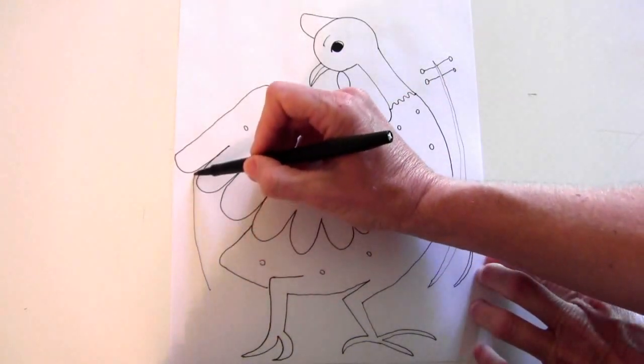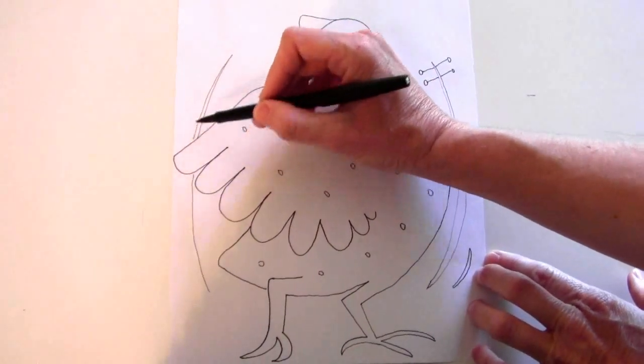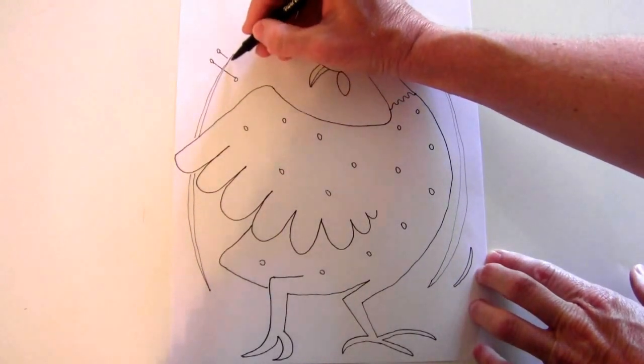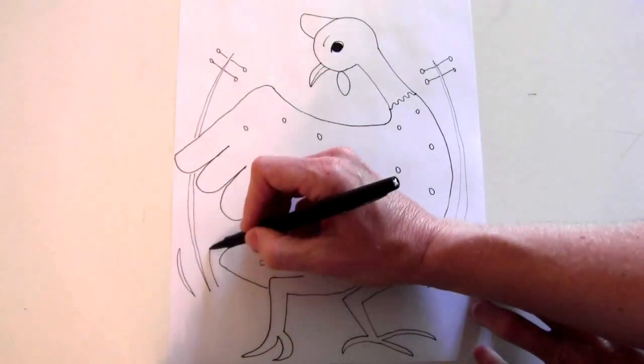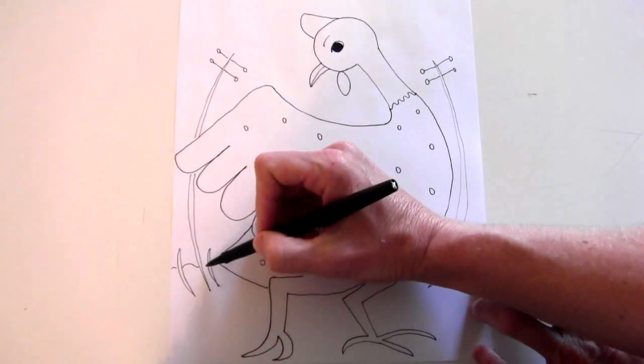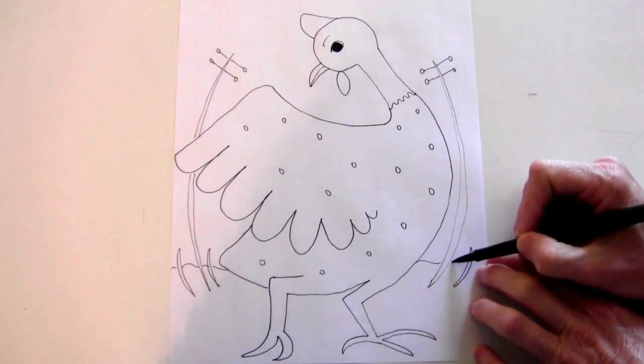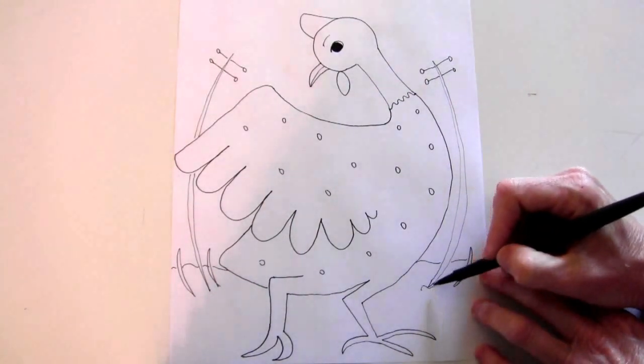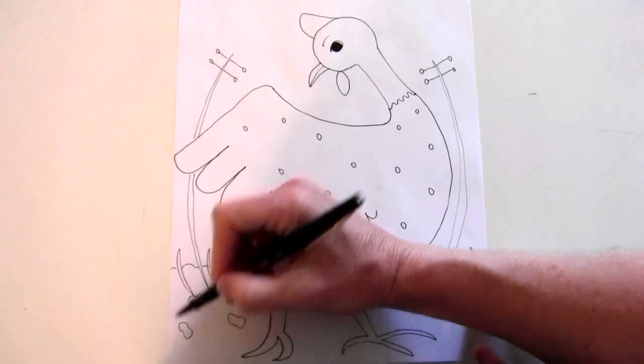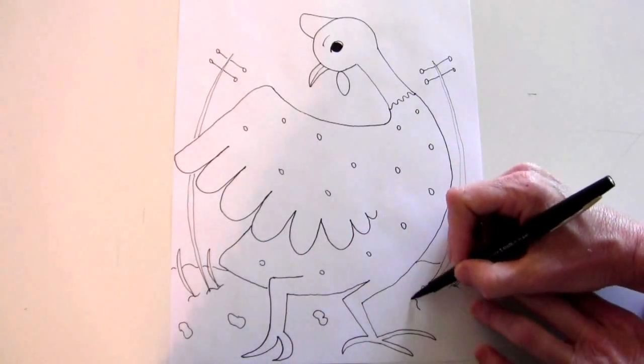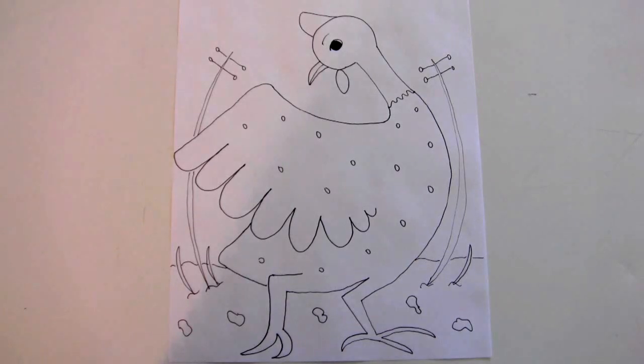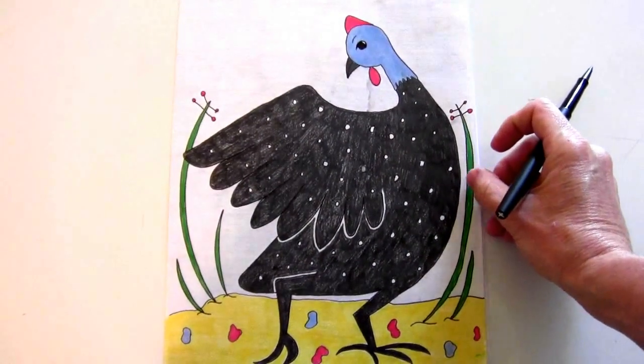And another one over here. And then a line for the land. Little line here, where the weeds are coming out of the ground. Some stones on the ground. There. And here's my colored version.